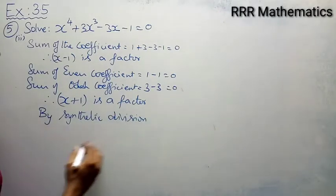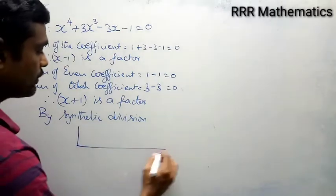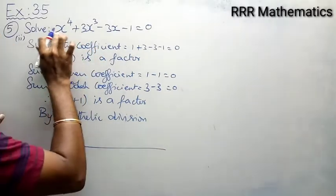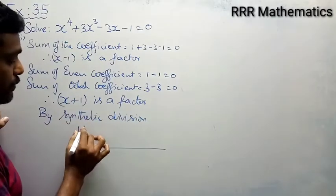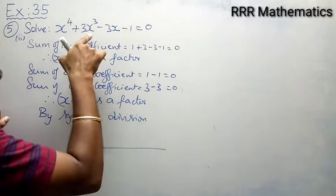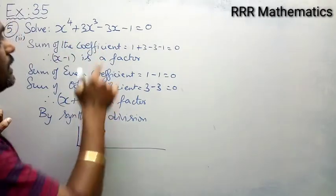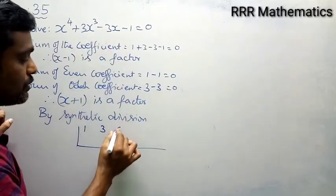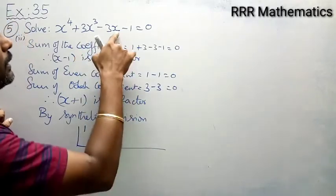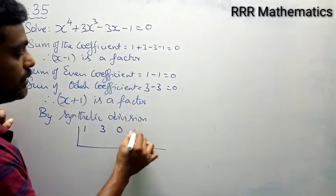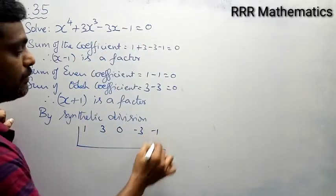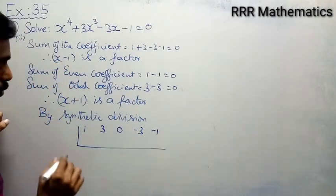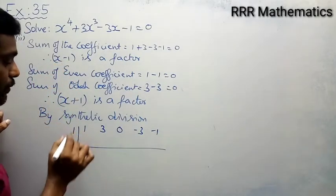By synthetic division, write all the coefficients in order: x⁴ coefficient is 1, x³ coefficient is 3, the x² term is missing so its coefficient is 0, x coefficient is -3, and the constant is -1. We can check using 1 and -1.